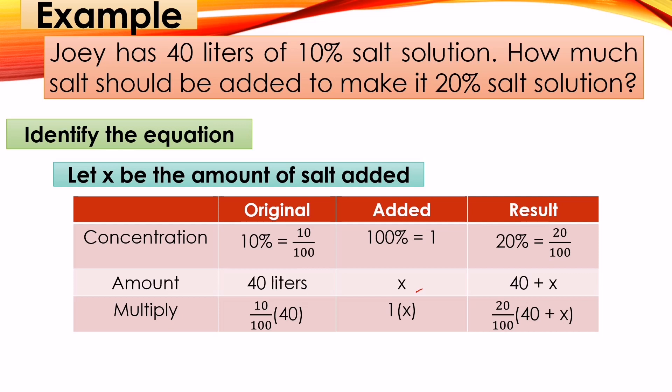Then the result will be 20% with 40 plus x liters. That's why the equation is 10/100 times 40 (the original) plus 1 times x (the added) equals 20/100 times (40 plus x), which is the result.